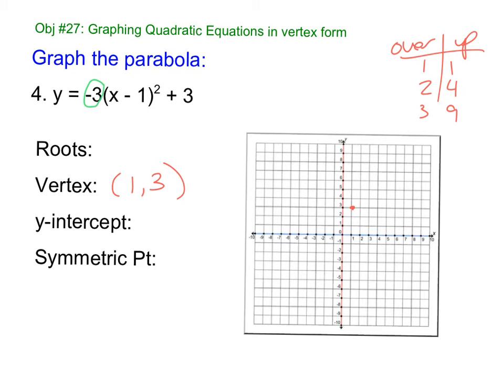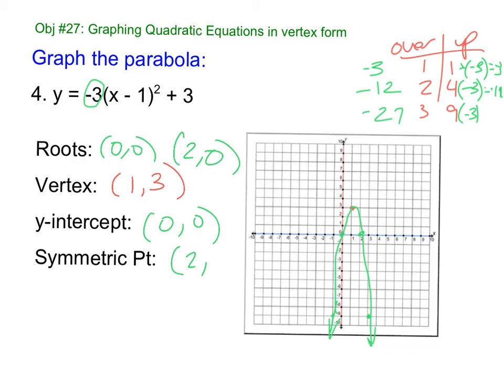So times negative 3, negative 3, negative 3. So I get, ugh, I'm running out of space. Negative 3, negative 12. Can you even see that? I'm going to write it over here. Negative 3, negative 12, negative 27. So, we can't do the 27, right? That's way too big. So I'll just fit what I can. So over 1, down 3. Over 2, down 12. So that's here and here. It's pretty skinny. So it's pretty common to have these, like, awkward graphs. So my roots here are 0, 0 and 2, 0. y-intercept. Well, we can just see that on the graph. It's 0, 0. And then, because of that, my symmetric point is 2, 0. That's it.